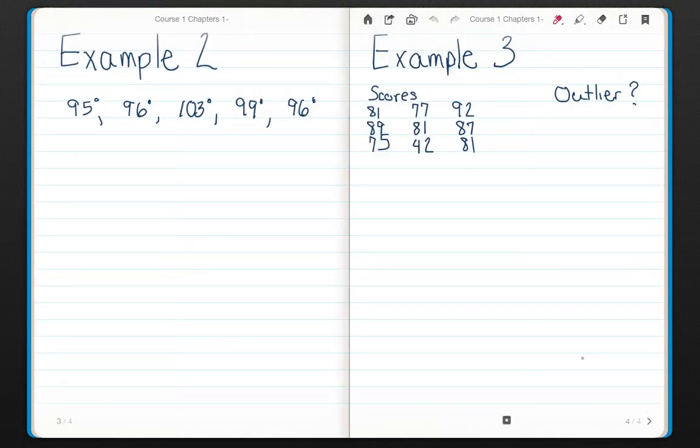Example 2 says you measure the temperature outside each day during the week. The temperatures are 95 degrees, 96 degrees, 103 degrees, 99 degrees, and 96 degrees. Find the mean of the temperature.